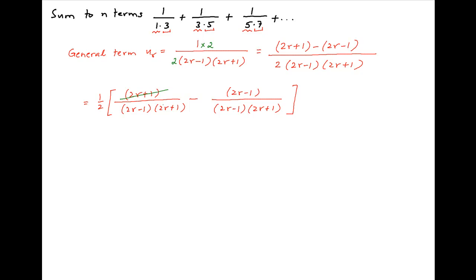2r plus 1 cancels across the numerator and denominator in the first term, and in the second term 2r minus 1 cancels out. Therefore the general term u_r can be written as half of, in brackets, 1 upon (2r minus 1) minus 1 upon (2r plus 1).